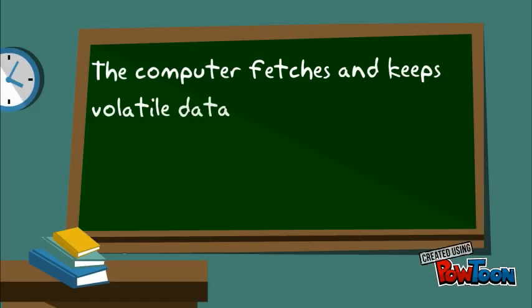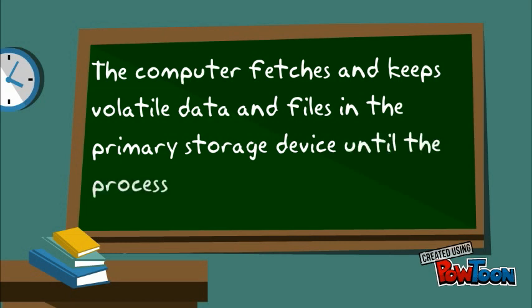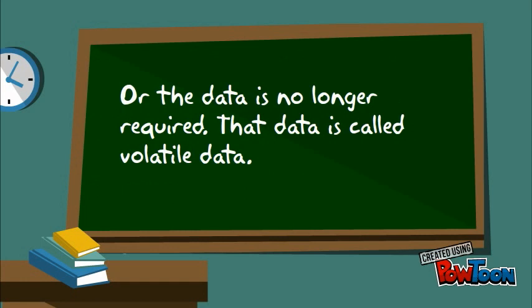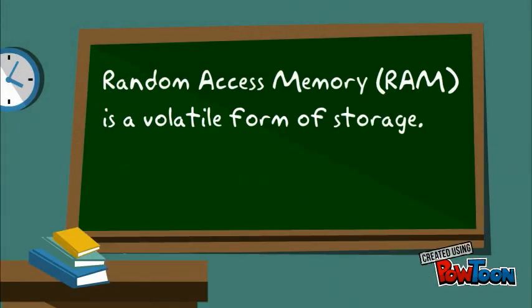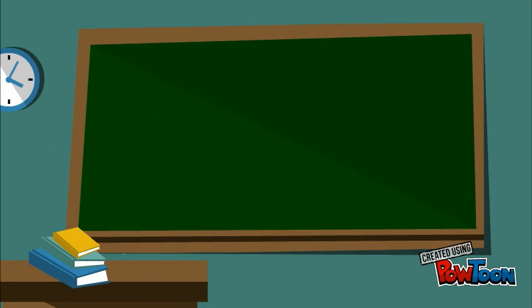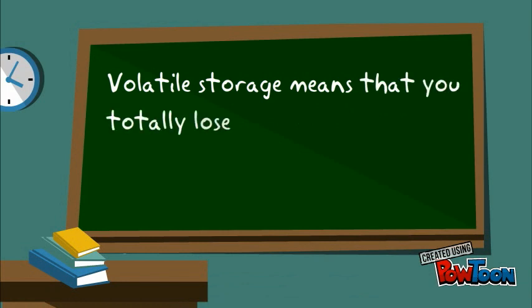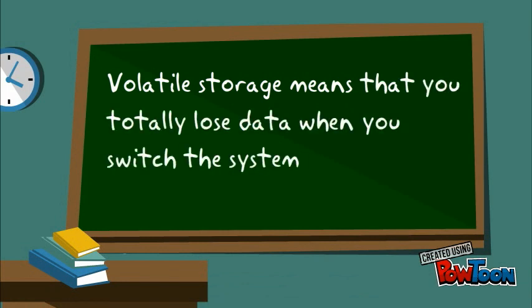The computer fetches and keeps data and files in the primary storage device until the data is no longer required. That data is called volatile. Random access memory is a volatile form of storage. Volatile storage means that you totally lose data when you switch off the system.